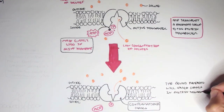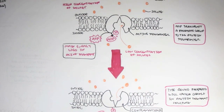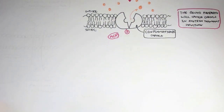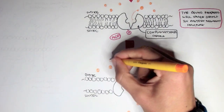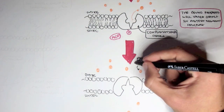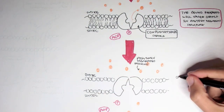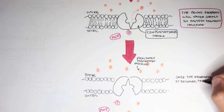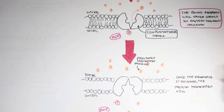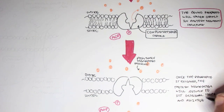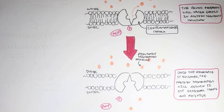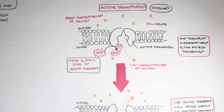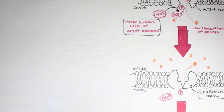The bound phosphate causes a change in the protein transporter structure. Then this bound phosphate group will be released, causing the active protein transporter to flip back to its original shape and position. Once the phosphate is released, the protein transporter returns to its original shape, and this process can occur again with ATP. ATP comes along and another solute can move up against its concentration gradient. That was an example of a primary active transporter.